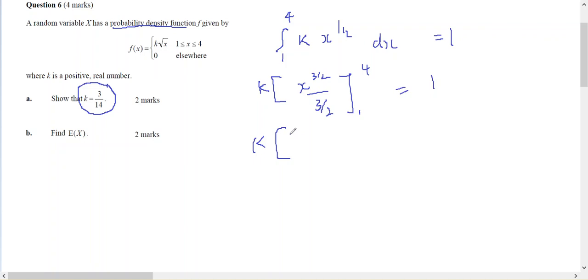k times, I might bring the, that's going to be a 2 on the top, so 2 on 3, x to the 3 on 2, from 1 to 4 equals 1.